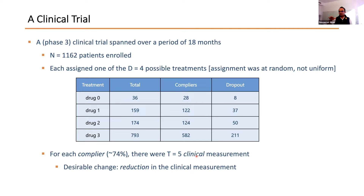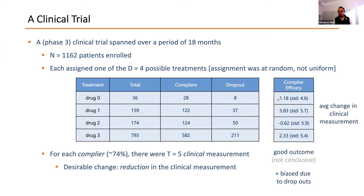The interest was whether we could achieve a reduction or at least minimize increase in the clinical measurement. Among compliers, the efficacy was reported here. Drug two had the highest mean difference — best outcome in terms of reduction — but the standard deviation was too high for anyone to conclude significantly which drug had the best outcome. One issue is bias due to dropout. Another question is whether something like Simpson's paradox is at play — maybe with personalized understanding of treatments, we could get more.